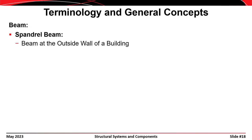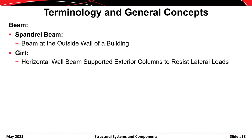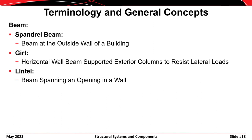Other types of beams: a spandrel beam is a beam along the outside edge of a building. A girt is a horizontal beam that spans between exterior columns and is there to resist lateral loads. When the wind blows against the facade of a building — maybe a window panel — the window passes that load into the girt, and the girt takes the load into the columns. A lintel is a beam that spans an opening in the wall, like a beam above a garage door.